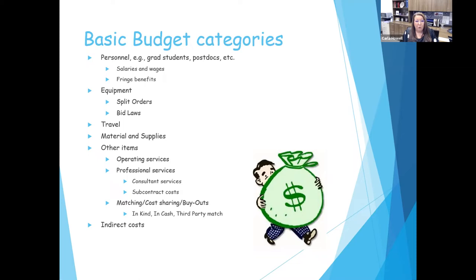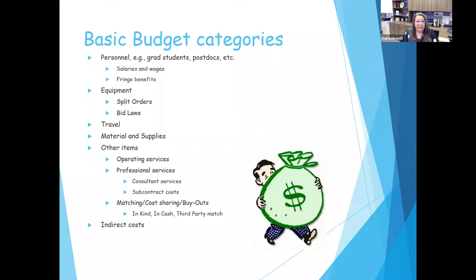Our policy here: if the funding agency doesn't require matching, don't put matching. You can mention it in your narrative that the university is supporting the project, but when you put it in that budget and budget justification specifically, you have to do that.